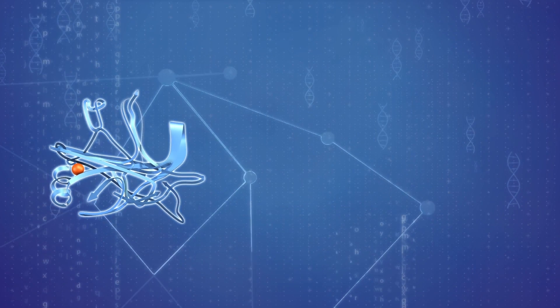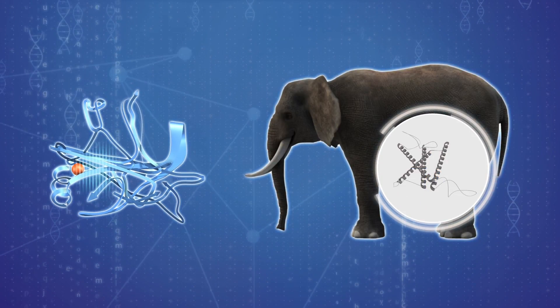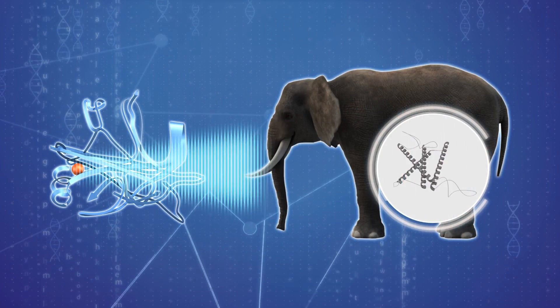A University of Chicago study found that P53 can also trigger an inactive pseudogene in elephants called LIF6 to come back to life.